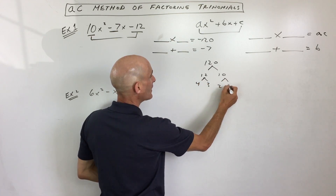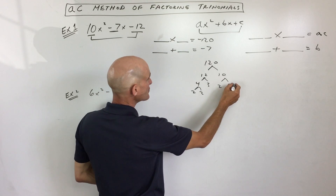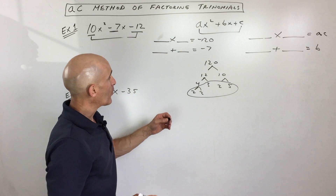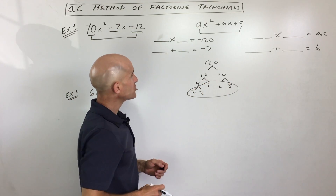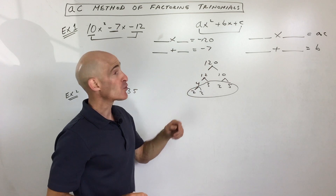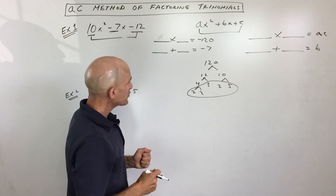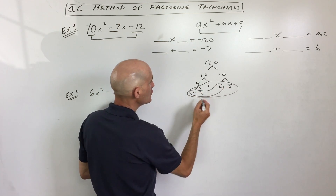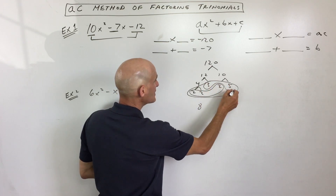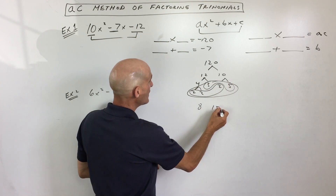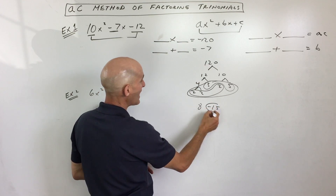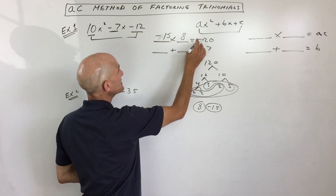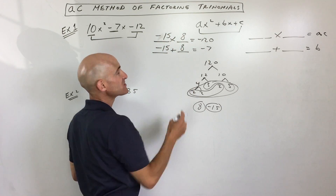I'm breaking this down using a factor tree. Now these are the numbers — if we multiply all these together, that's going to give us 120. What I'm going to do is make two groups so they multiply to give us 120, then check if they add up to negative 7. See how 2 times 2 times 2 is 8, and over here 3 times 5 is 15. Because it's negative 120, I'm going to make this negative 15 and positive 8. Negative 15 times 8 is negative 120, and negative 15 plus 8 equals negative 7.